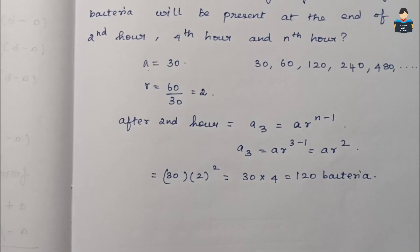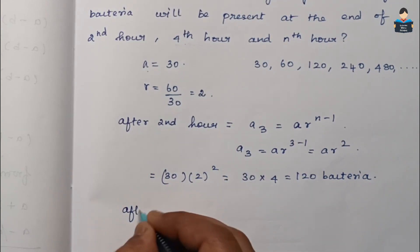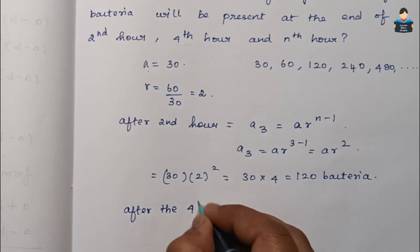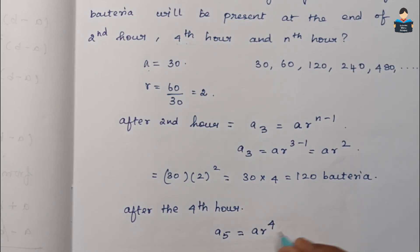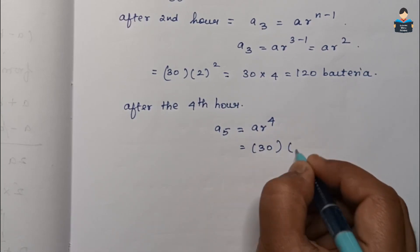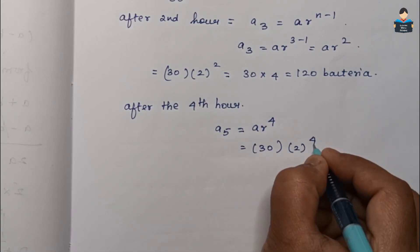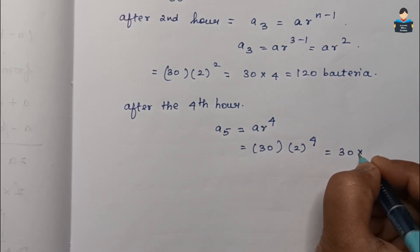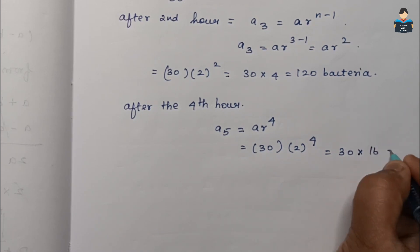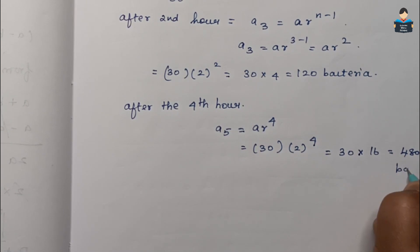Next, after the fourth hour. To find this, we need a5, which equals a times r to the power 4. Substituting a value 30 and 2 to the power 4: 30 times 2 to the power 4, which is 30 times 16, equals 480 bacteria.